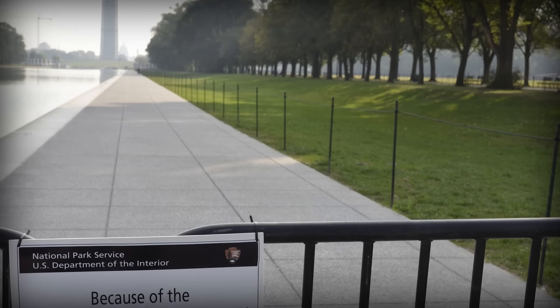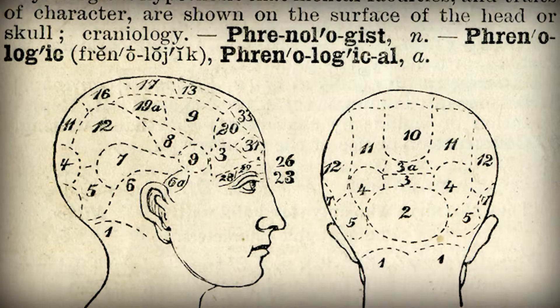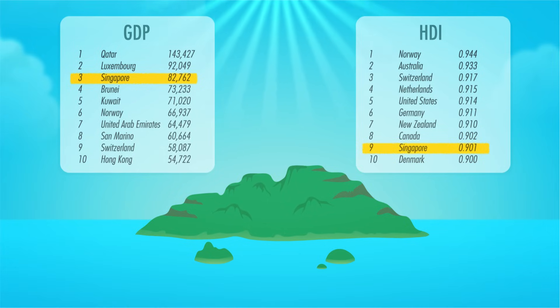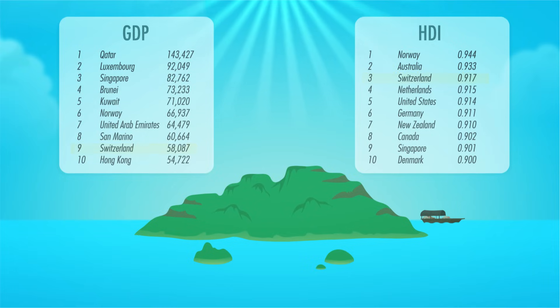Countries with a low standard of living are the ones that are conventionally considered poor. So why are some countries poor? If you ask someone on the street, they might say the difference is due to lack of natural resources or inept governments. But resources and leadership are interesting. First, resources — look at Singapore, third in GDP per capita and ninth on the Human Development Index. Or Switzerland, ninth in GDP per capita and third on the HDI.